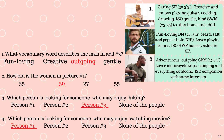Follow along and read with me. Number one: Caring SF, 35, creative and enjoys playing guitar, cooking, drawing. ISO gentle, kind SWM, 25 to 35, to stay home and chill.